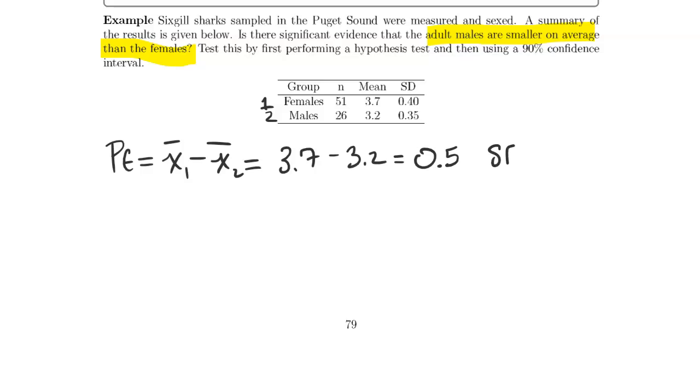The standard error is going to be the same no matter what approach we're taking, so let's compute that as well. We're going to have 0.40 squared divided by 51 plus 0.35 squared divided by 26, and that comes out to be 0.0866.